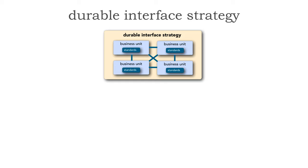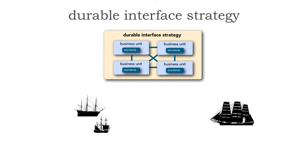A good way to illustrate the durable interface strategy is to go back in history to the late 1700s, around 1790, when we had maritime wars. Let's say two ships on the left-hand side are sailing along and they see a really large ship on the right-hand side. The question is: friend or foe? Is that an enemy ship — should we prepare for battle or run away? Or is it a friend, in which case we can continue sailing or meet up to exchange news? How can these two groups of ships, doing entirely different things, communicate with one another?